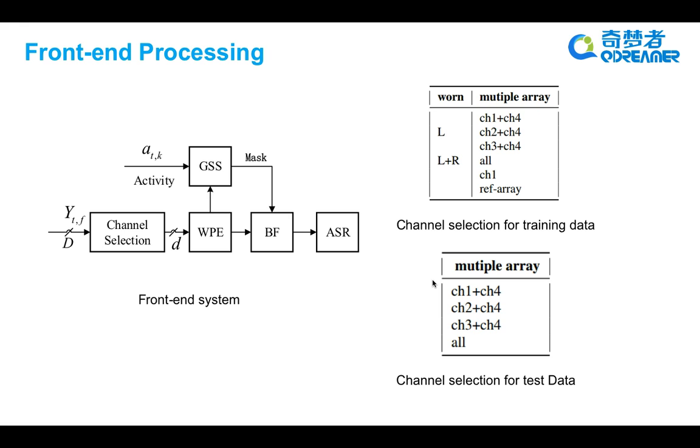For multiple array data, the label channel 1 plus channel 4 stands for that only the first and last channel are selected for each array. And the label all stands for that all channels are selected for each array.